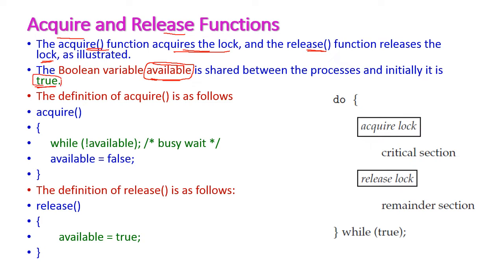Let us see the definition of the acquire function. In the acquire function, there is a while condition: 'while not available.' Initially the available value is true, so 'not available' is false. Once the condition is false, the control comes out of the while loop. Then the process makes 'available' equal to false, and after that it enters the critical section — locking entry to the critical section for other processes. This is what the acquire function does.